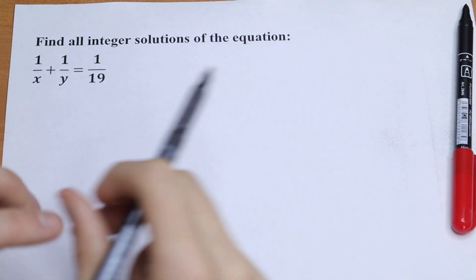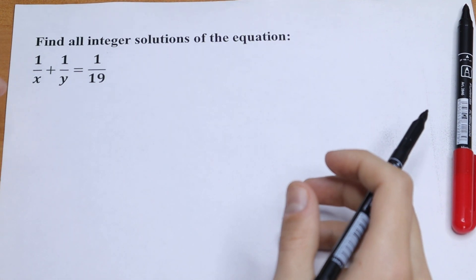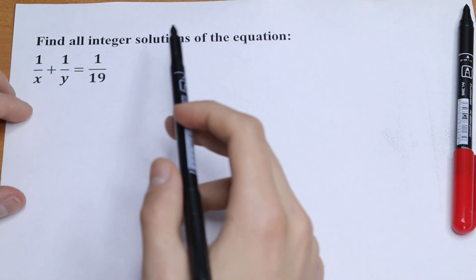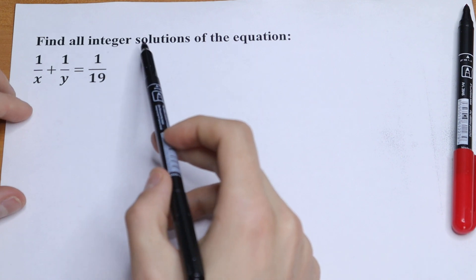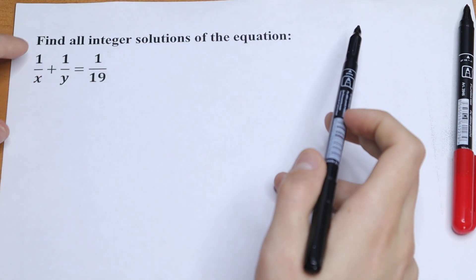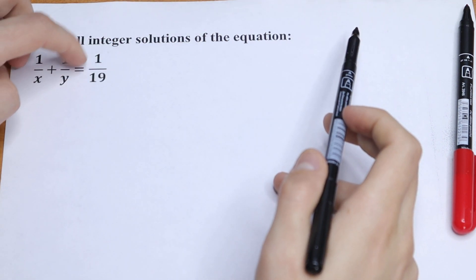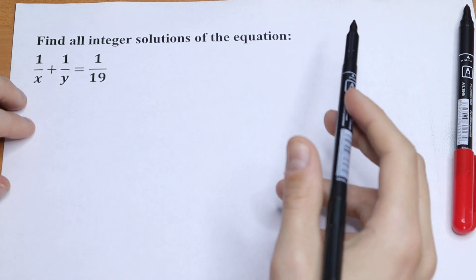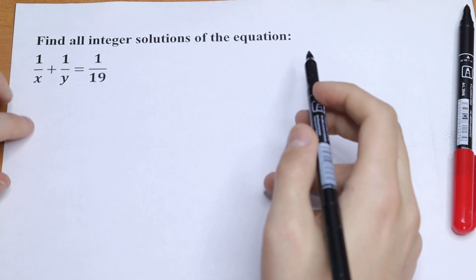Hello everyone, welcome back to MathMood. Today we have an interesting algebra problem. We need to find all integer solutions of the equation 1 over x plus 1 over y equal to 1 over 19. How can you solve this?